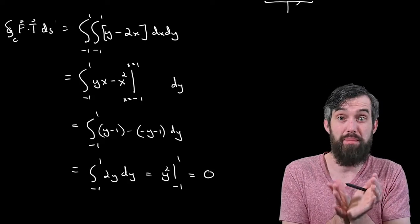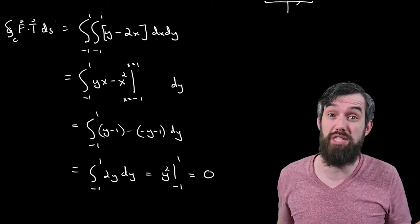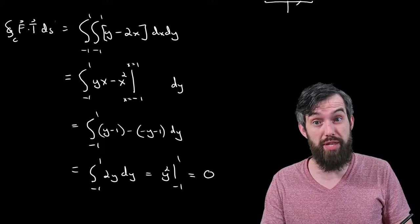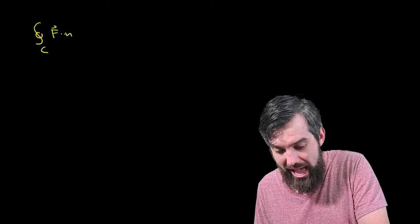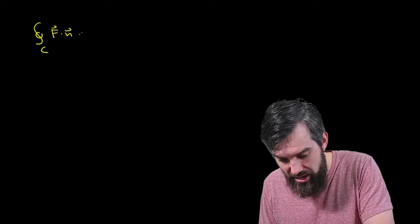Okay, so that's kind of interesting. But now let's go and compute flux via Green's Theorem as well and see what that result is. And I'll go a little bit faster through this one. For the flux, it's now the integral along the curve of f dot n. Flux measures the degree to which it's going in the outward normal n and then ds.